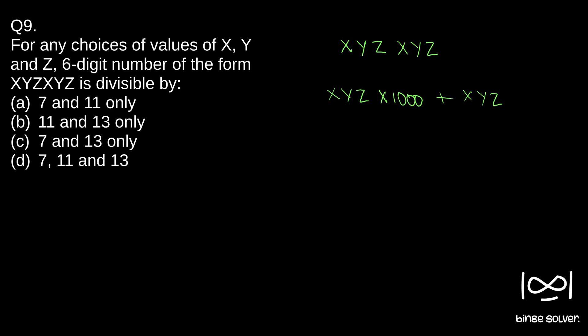So if you do this, you get XYZXYZ. XYZ into thousand is nothing but XYZ into three zero, plus XYZ.